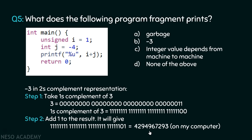The maximum unsigned integer value when integer is 4 bytes is 4,294,967,295. Since one bit (place value 2^1 = 2) is not set, we subtract 2 from the maximum value: 4,294,967,295 - 2 = 4,294,967,293. This is on a 4-byte integer machine. On a machine where integer is 2 bytes, the maximum value would be different and subtracting 2 would give something else. Because of %u, the output is an integer value that depends from machine to machine — answer is C. If it were %d, the output would be -3.